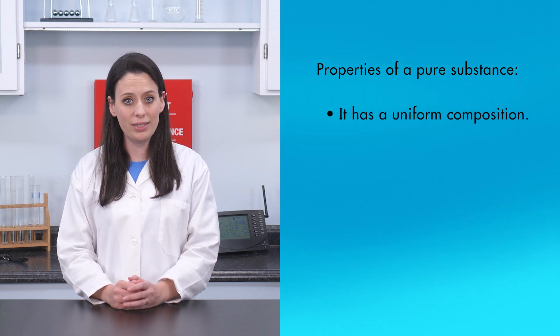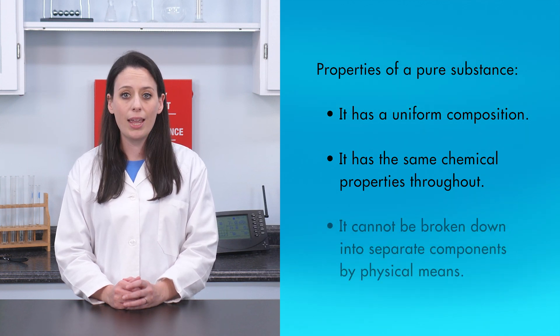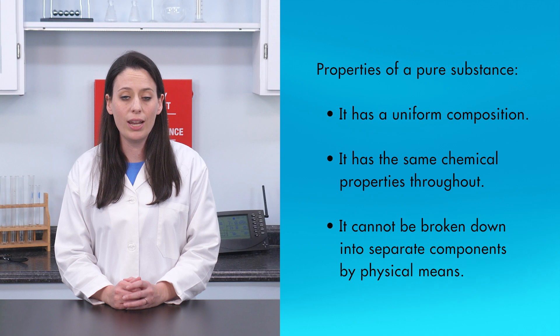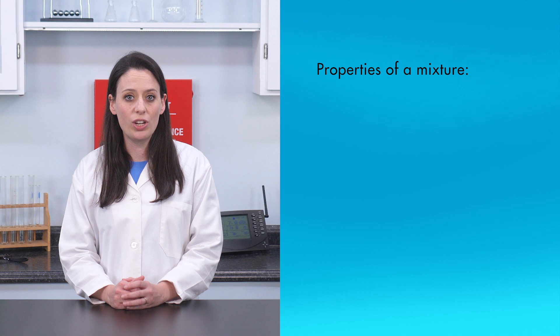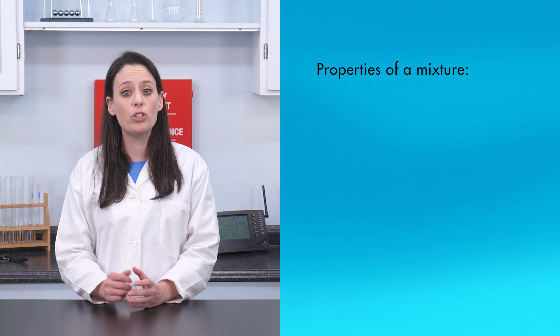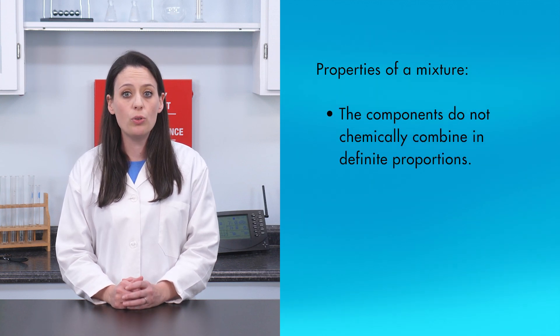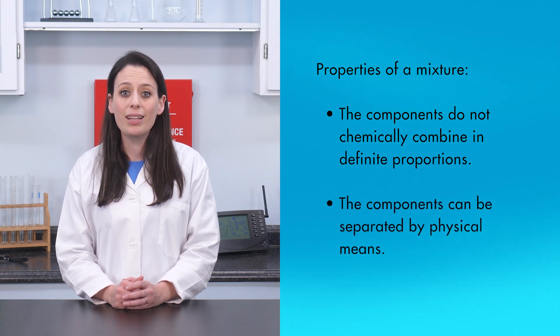It has a uniform composition, it has the same chemical properties throughout, and it cannot be broken down into separate components by physical means. A mixture is a substance consisting of two or more components with these two properties: the components do not chemically combine in definite proportions, and the components can be separated by physical means. Pure substances and mixtures are defined according to their physical and chemical properties.